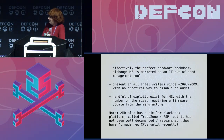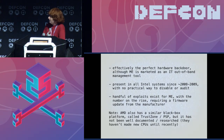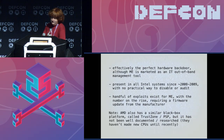Some of you may be thinking about Intel's competitor AMD, which has significantly less market share currently. They also have a similar technology called TrustZone slash Platform Security Processor, but given that they haven't made CPUs recently until Zen, this technology has not been well documented or researched.